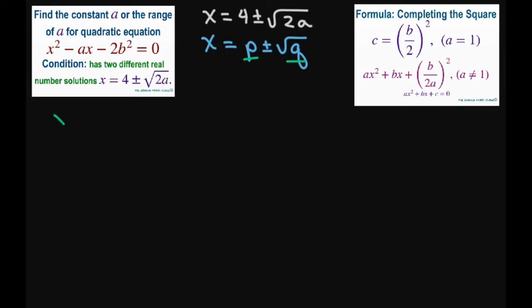So basically if I take my x squared minus Ax and I move, this is a constant, if I move it over on this side I get 2b squared. Now when you complete the square what you do is you take half of your A, so it's A divided by 2 and then you square it. So this is going to give you A squared divided by 4.